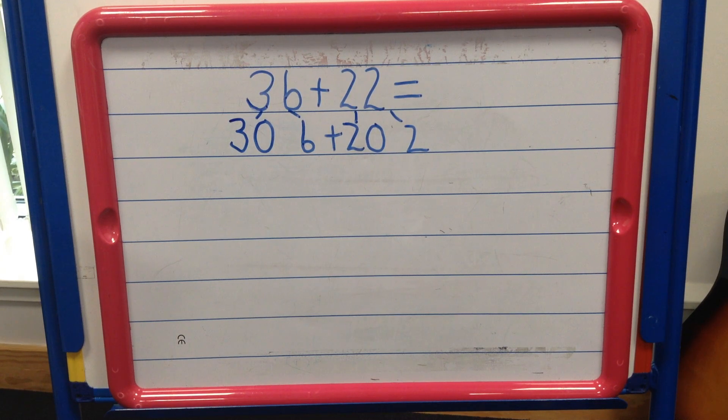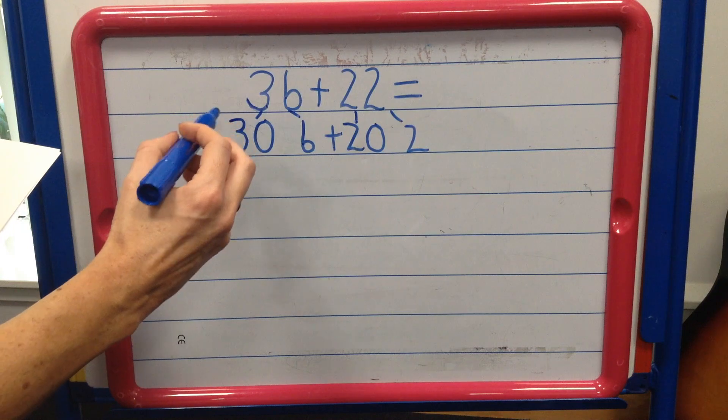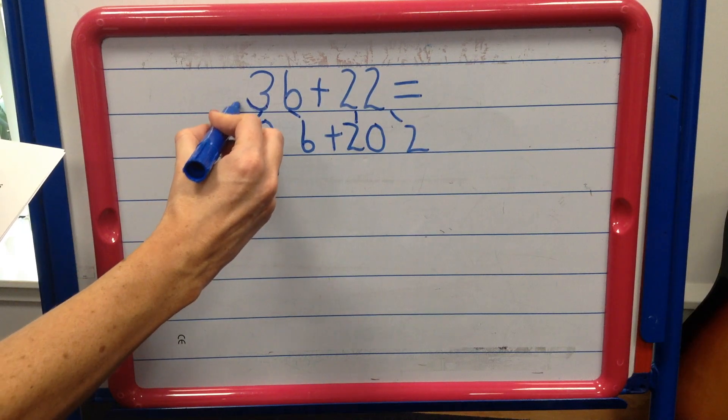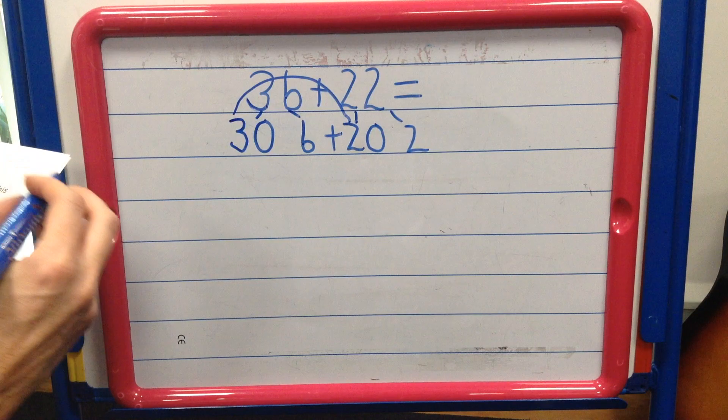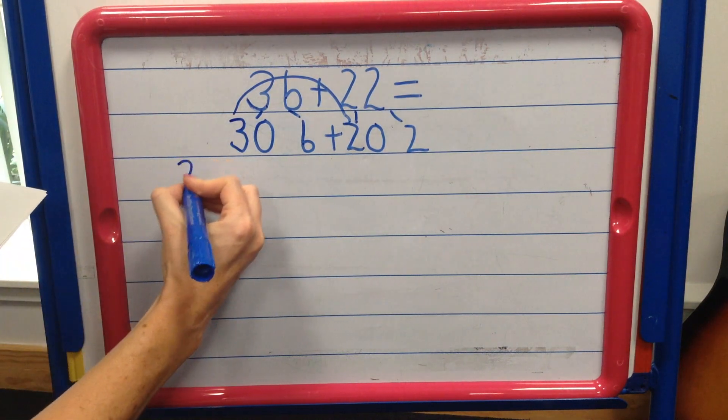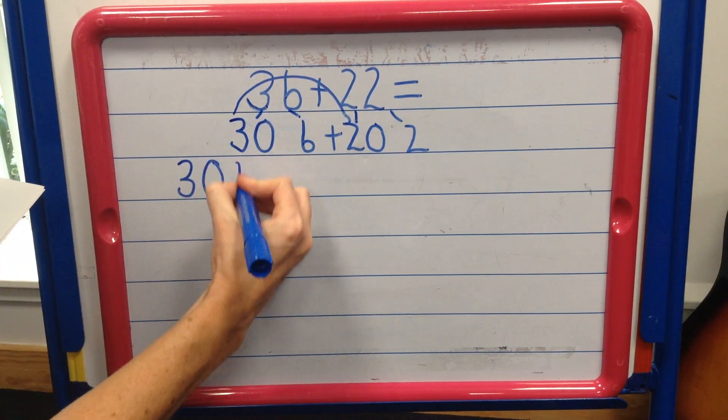Step 2. In step 2, we add all of our tens together. Watch. 3 tens, add on 2 more tens, gives us 5 tens or 50.